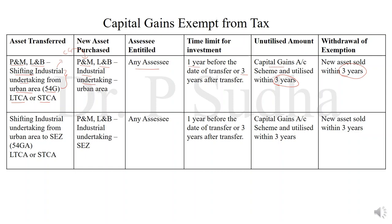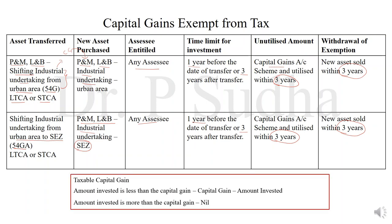The next is section 54GA, which is similar to 54G. The only difference is shifting the industrial undertaking from urban area to SEZ — that is, special economic zone. If the plant and machinery or land and building is sold in the process of shifting the industrial undertaking from urban area to special economic zone, and new plant and machinery and land and building is purchased for industrial undertaking in the special economic zone, any assessee can claim — same time limit of one year before or three years after transfer. Unutilized amount deposited in capital gain account scheme, unutilized within three years. If the new asset is sold within three years, the exemption will be withdrawn. Taxable capital gain: if the amount invested is less, capital gain minus amount invested; if the amount invested is more, taxable capital gain will be nil.